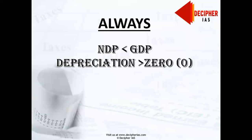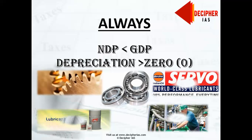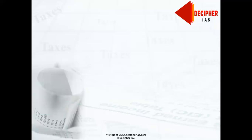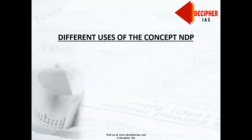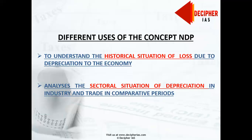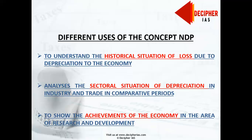But mankind has achieved much in this area through developments such as ball bearings, lubricants, etc., all innovated to minimize the level of depreciation. Now, the different uses of Net Domestic Product (NDP): it is for domestic use only, to understand the historical situation of loss due to depreciation to the economy. It is also used to understand and analyze the sectoral situation of depreciation in industry and trade across comparative periods, and to show achievements of the economy in research and development which have tried cutting depreciation levels over historical time periods. However, NDP is not used in comparative economics to compare economies of the world, because different economies set different rates of depreciation.